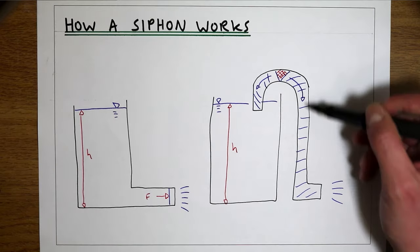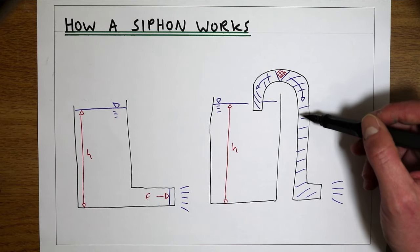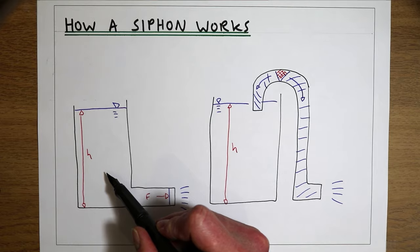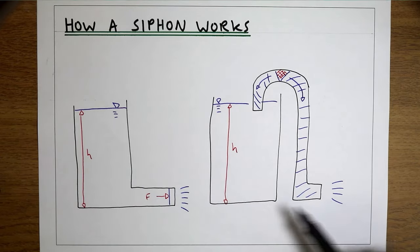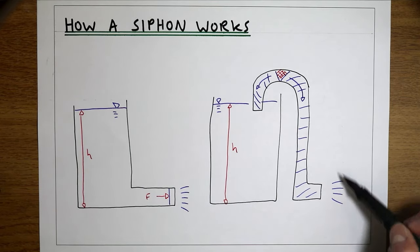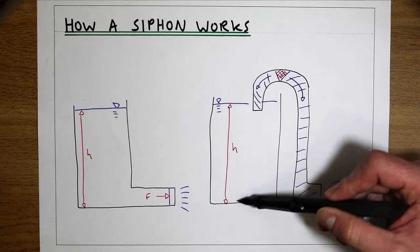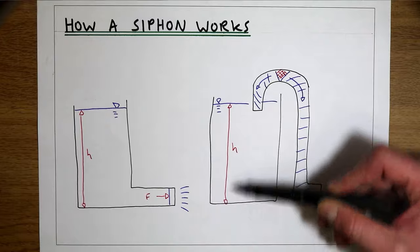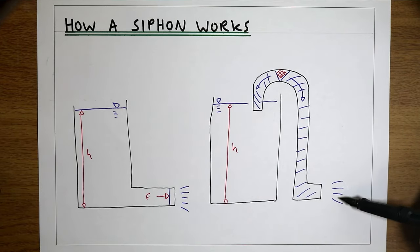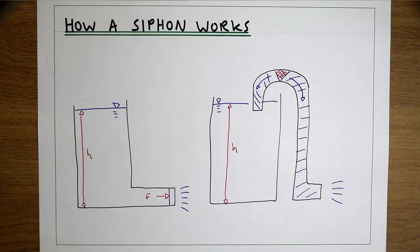So if the pipe is full, this system is behaving in exactly the same way as the simple flow system, and the flow coming out of the full pipe is just going to be proportionate to the difference in pressure inside the tank and the pressure at the outlet of the system. And that is how a siphon works.